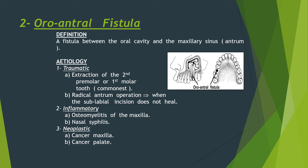Another type of trauma is the oroantral fistula, which is a fistula between the oral cavity and the maxillary sinus. It may be traumatic due to extraction of the second premolar or first molar tooth — which is the common cause — or by doing a radical antrum operation when the sublabial incision does not heal.